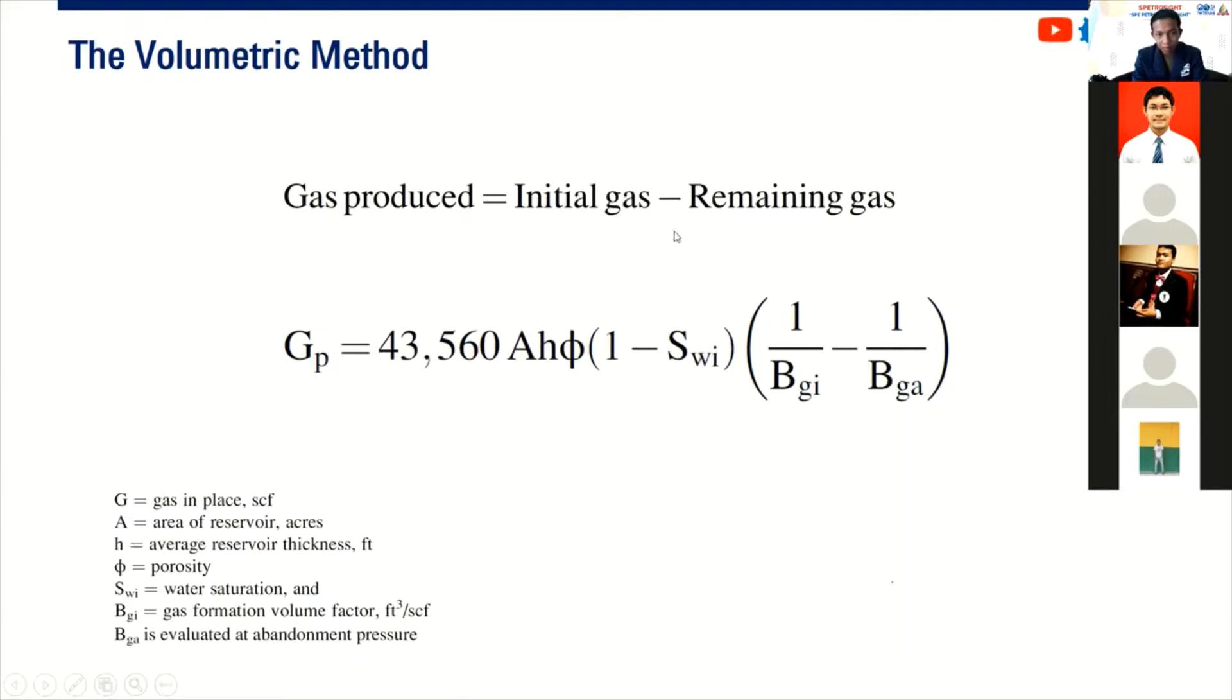And we can determine the remaining gas if we already decide the abandonment pressure. The abandonment pressure is the last pressure of our operation. If the abandonment pressure is reached, then we can conclude the operation, we can shut down everything, and then we can close the field and give back to the government.